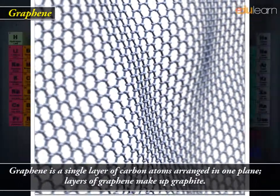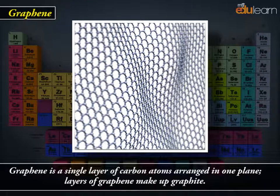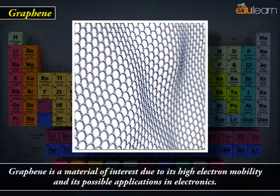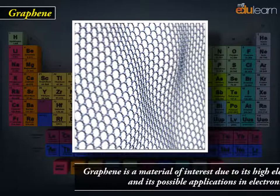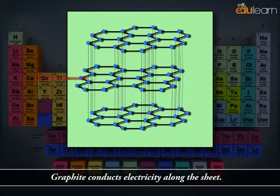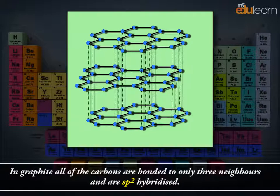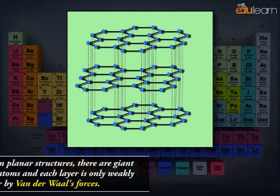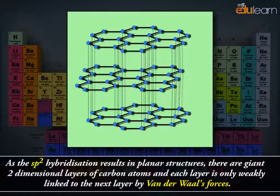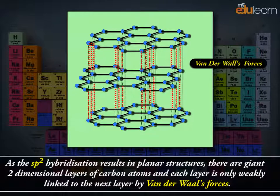Graphene is a single layer of carbon atoms arranged in one plane. Graphite is a material of interest due to its high electron mobility and its possible applications in electronics. Graphite conducts electricity along the sheet. Each carbon atom is bonded to only three neighbors and is sp2 hybridized. As sp2 hybridization results in planar structures, they are giant two-dimensional layers of carbon atoms, and each layer is only weakly linked to the next layer by van der Waals forces.